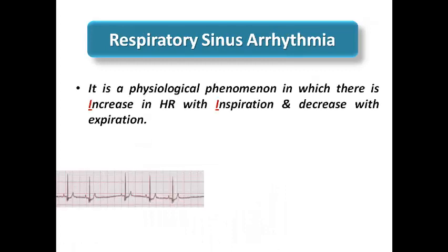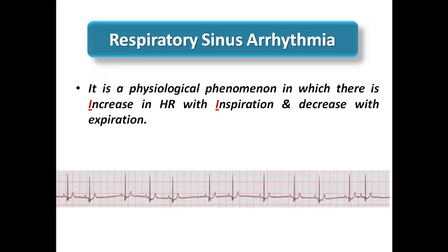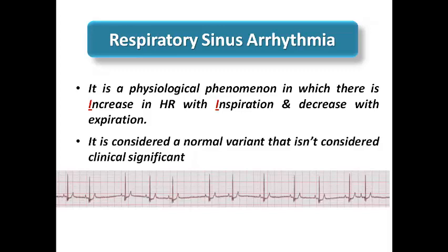Respiratory sinus arrhythmia is a famous terminology from undergraduate learning. It means there is an increase in heart rate with inspiration and a decrease with expiration — a useful mnemonic is 'I for increase, I for inspiration.' It is a physiological phenomenon in which heart rate varies with the breathing cycle. It is a normal variant; do not misdiagnose this ECG as PACs, because here the P-wave morphology remains the same throughout — it is sinus rhythm, just with respiratory sinus arrhythmia.